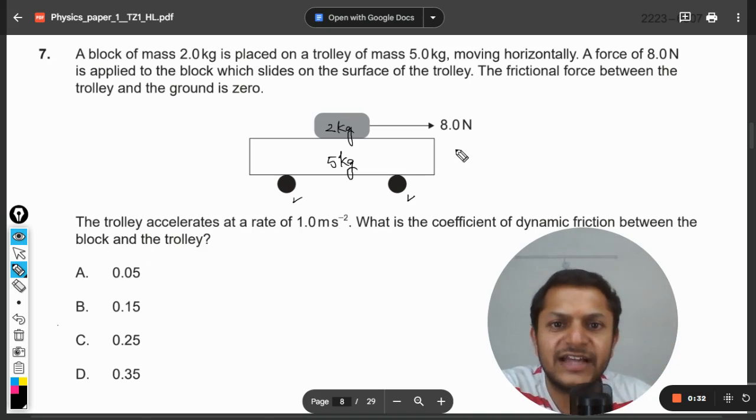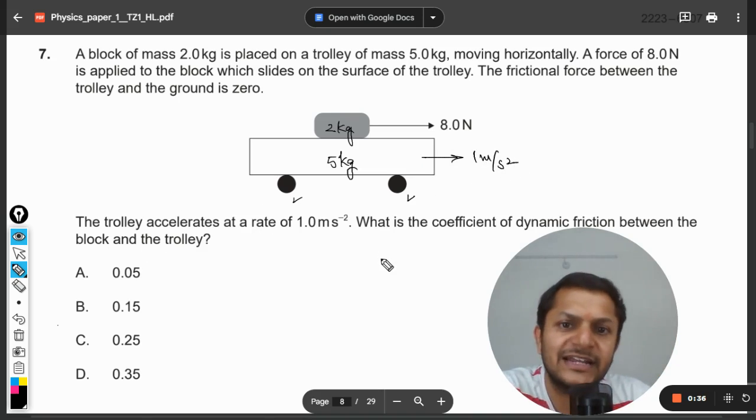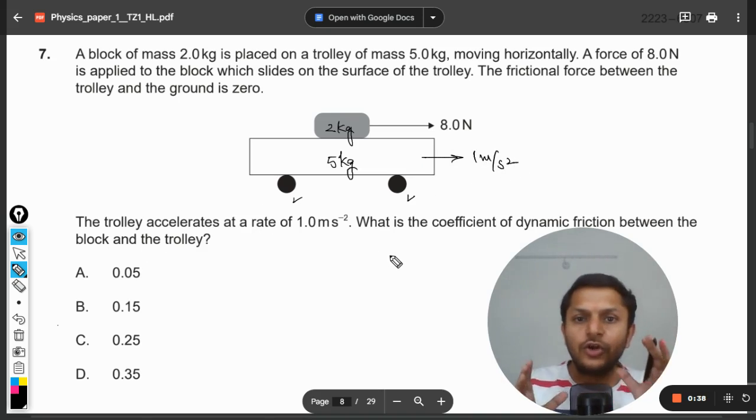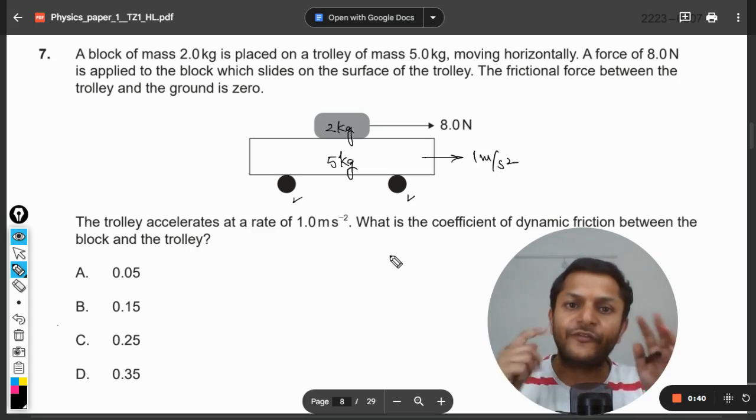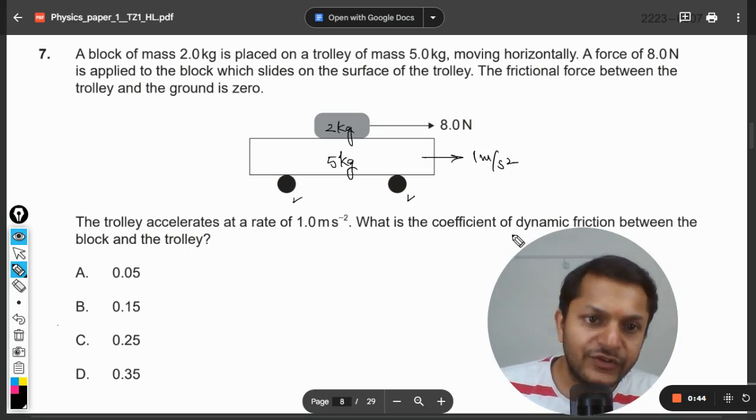Okay, the trolley accelerates at the acceleration of 1 meter per second square. So the acceleration of the trolley is given although the force is applied on the block not on the trolley. What is the coefficient of dynamic friction between the block and the trolley?